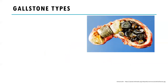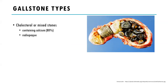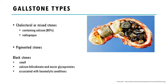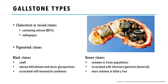Most gallstones tend to be a mixture of cholesterol and calcium. They can also be pigmented stones with a combination of calcium bilirubinate and mucin glycoproteins. Black stones are associated with hemolytic conditions. Brown stones, commonly seen in the Asian population, are associated with infections and parasites and are more commonly found in the biliary tree.